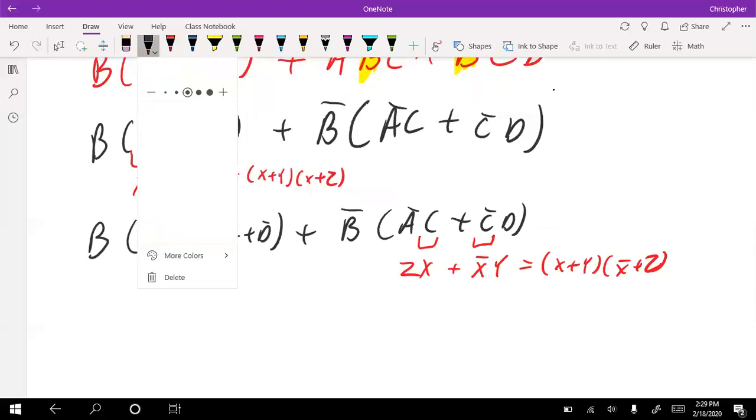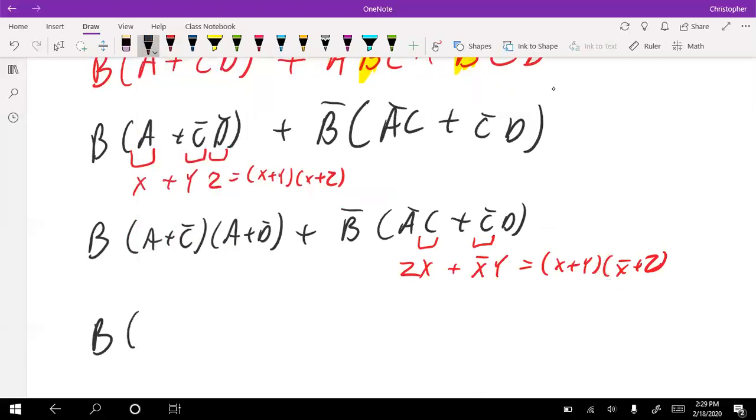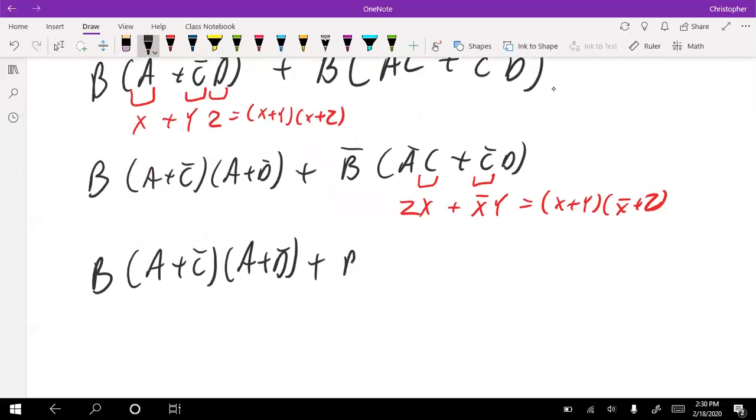That comes out to be x plus y with x bar plus z. We'll use that to continue, writing down the first term unchanged. We're going to expand out the second term. x is C plus y is D, x bar is C bar and z is A bar.